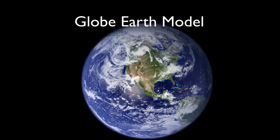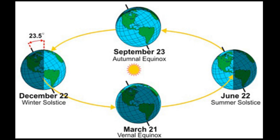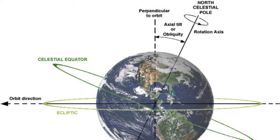The Globe Earth model says that the Earth is a rotating globe, 25,000 miles in circumference, lit by a Sun 93 million miles away, which we orbit once a year. Our Earth rotates once every 24 hours to give us our days and nights. The Moon orbits the Earth about once a month, and is also lit by the Sun, and is about 250,000 miles away. Our Earth is tilted 23 degrees, and this tilt gives us our seasons as we orbit the Sun. This tilt is relatively fixed in relation to the universe of stars, which are almost infinitely far away in terms of Earth scale.